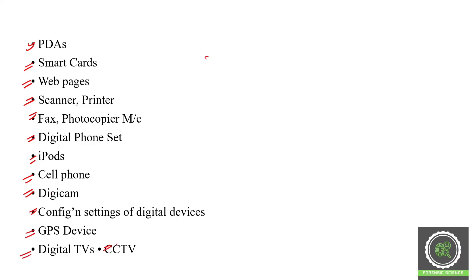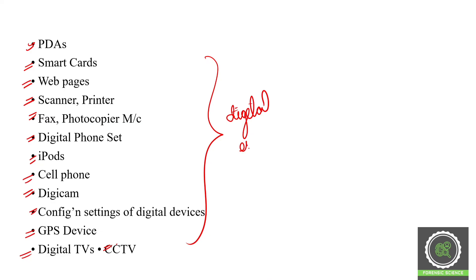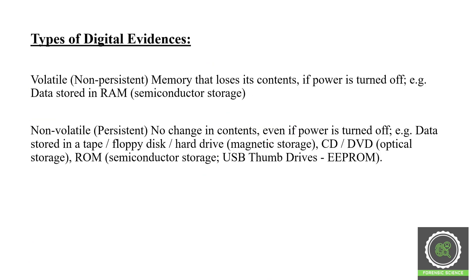GPS devices, digital TV, and CCTV are all digital evidences. These are all the types and sources of digital evidence covered in today's lecture.